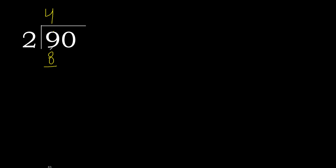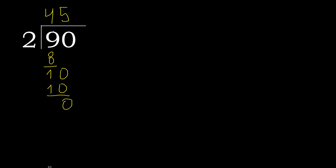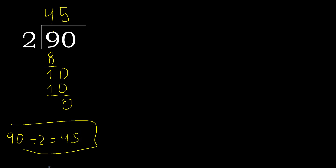9 minus 8 is 1. Next, bring down 10. 2 multiplied by 5 is 10. 10 minus 10 is 0. There is no remainder, therefore we finish. 90 divided by 2 is 45. Ok.